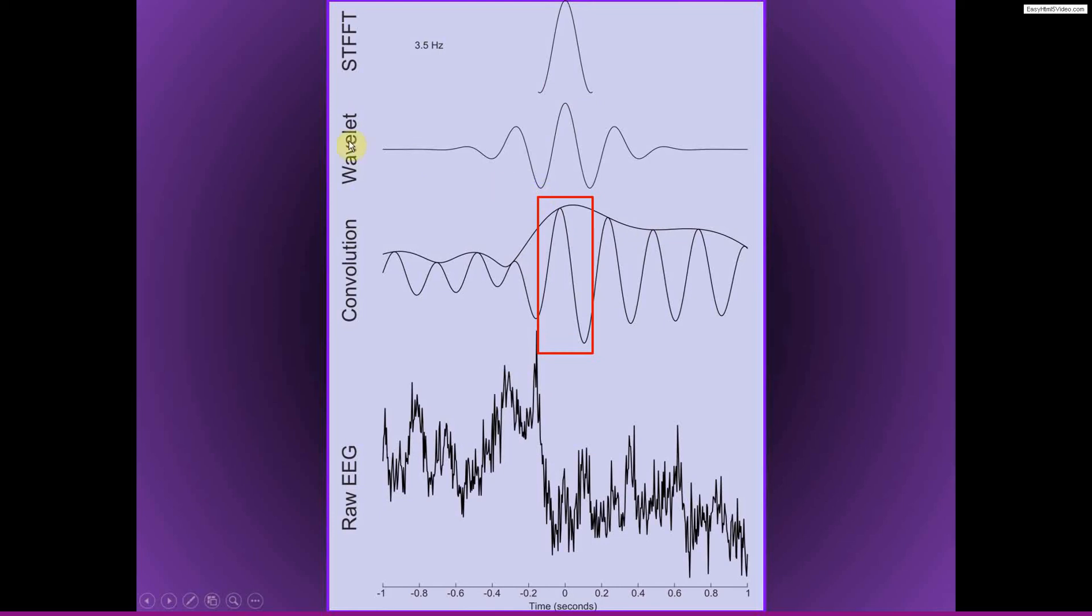And so for a wavelet convolution, averaging the power within a 300 ms window does not mean that you are estimating 3.5 Hz activity only using the data from within this 300 ms window. In fact, the estimate of activity inside this window is also influenced by activity earlier, before the time window, and after the time window.